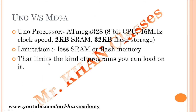Let's look at the difference between UNO and Mega. The UNO uses the ATmega328 chip, which is an 8-bit CPU running at 16 MHz clock speed. It has only 2 KB of RAM and 32 KB of flash storage. That 32 KB flash storage is a limitation — it limits the kind of program you can load. If your program is larger than 32 KB, you cannot use the UNO and need to switch to the Mega.